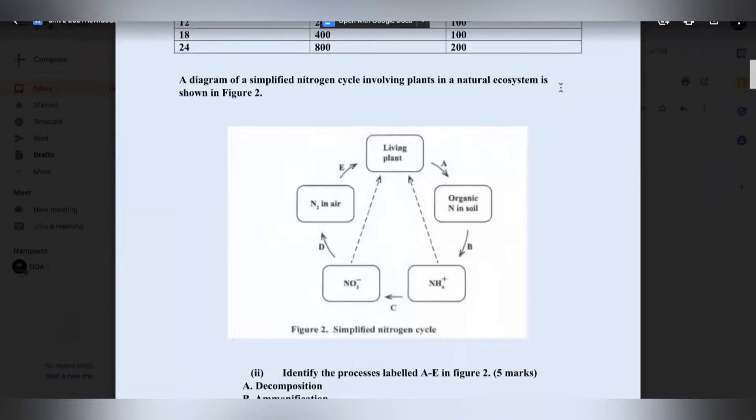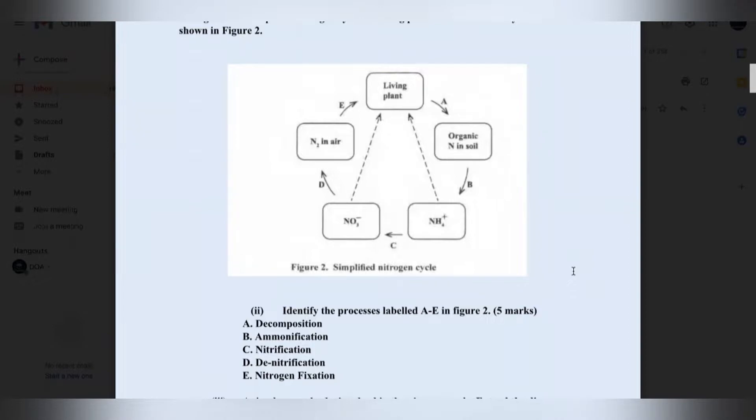A diagram of a simplified nitrogen cycle involving plants in a natural ecosystem is shown in figure 2. Identify the processes labeled A to E in figure 2. So the first thing you should ask yourself is what is the nitrogen cycle? Well, the nitrogen cycle is the cycling of nitrogen through living and non-living things in the ecosystem. Then you should be thinking about the different processes of the nitrogen cycle.